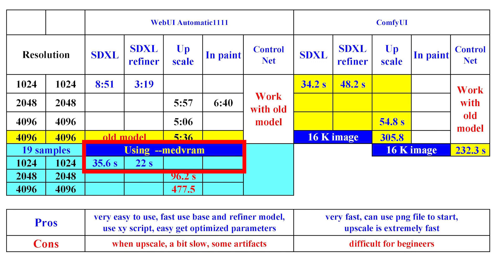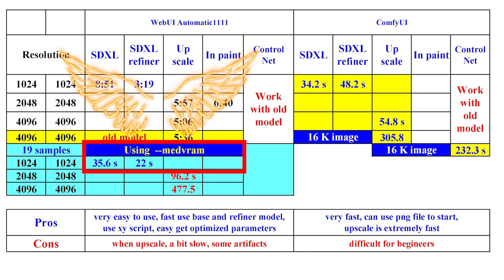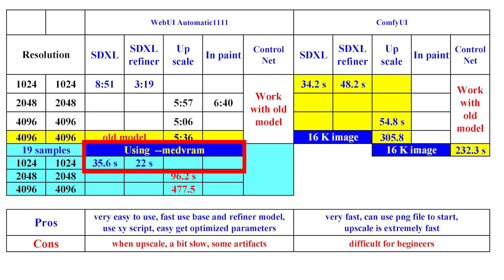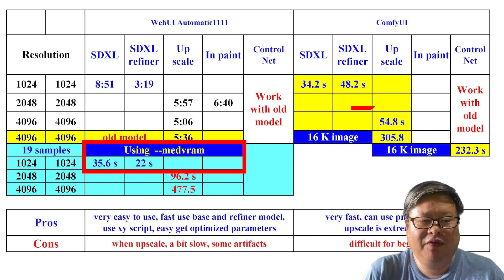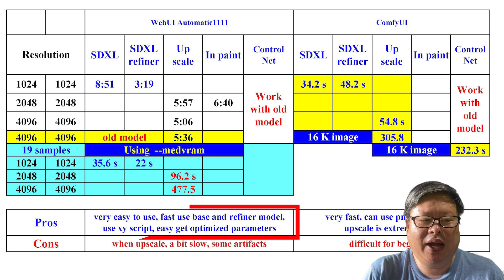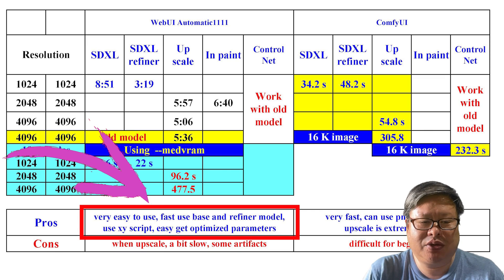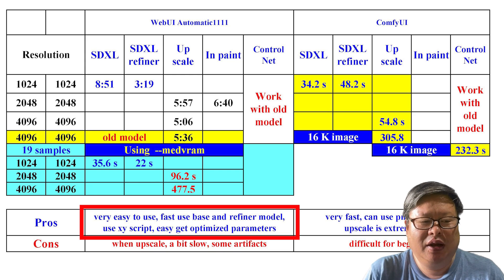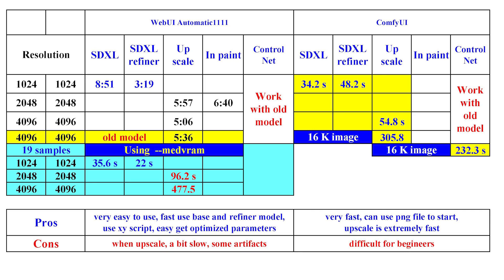In conclusion, with some parameter modifications and adjustments, WebUI Automatic1111 can generate images very fast using the base model, and the refine process is also very rapid. On the other hand, ComfyUI is extremely fast in the upscaling process. Using WebUI Automatic1111 with the script function makes it easier to find optimized parameters. However, it is challenging to find good parameters when using ControlNet. I hope this will change soon.